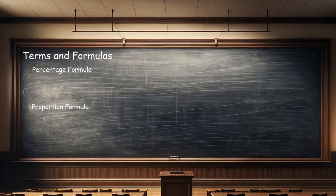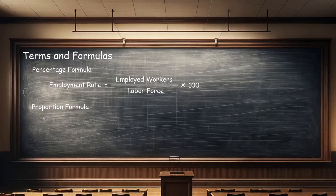If the employment rate is written as a percent of the labor force, then the formula is: employment rate equals number of employed workers divided by the labor force times 100%. If the employment rate is presented as a proportion or decimal fraction of the labor force, then the formula is: employment rate equals the number of employed workers divided by the labor force.